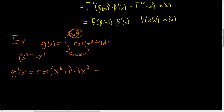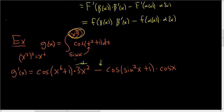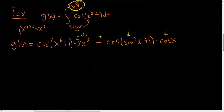Then subtract. Now plug in the lower limit sine x for t: cosine of sine squared x plus 1. Multiply by the derivative of sine, which is cosine. So: plug in the upper limit, multiply by its derivative, subtract, plug in the lower limit, multiply by its derivative. Really straightforward.